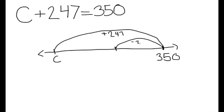While you're jumping back, you don't have to jump 247 at once. You could first jump 200 to the left. You should land on 150.